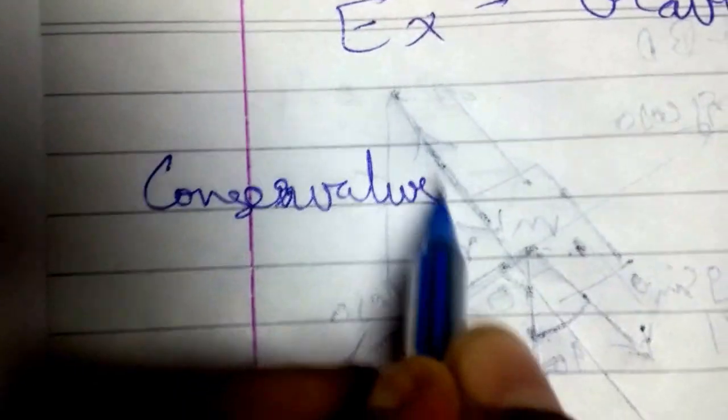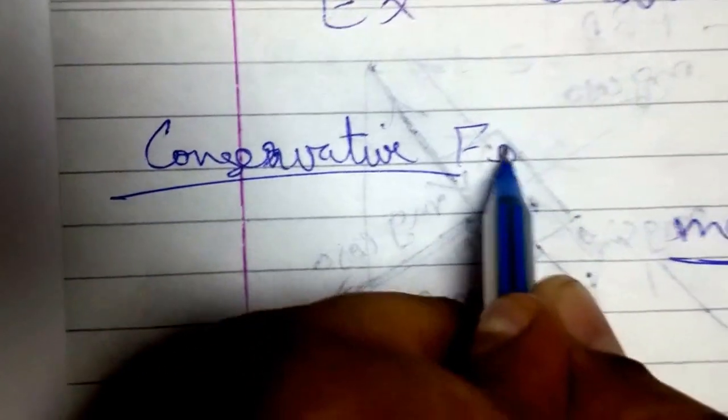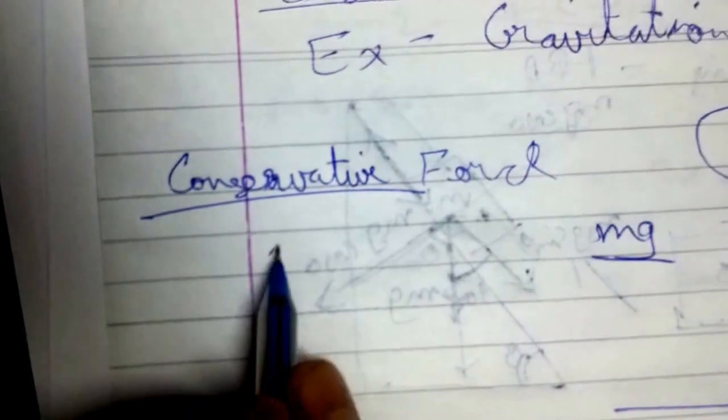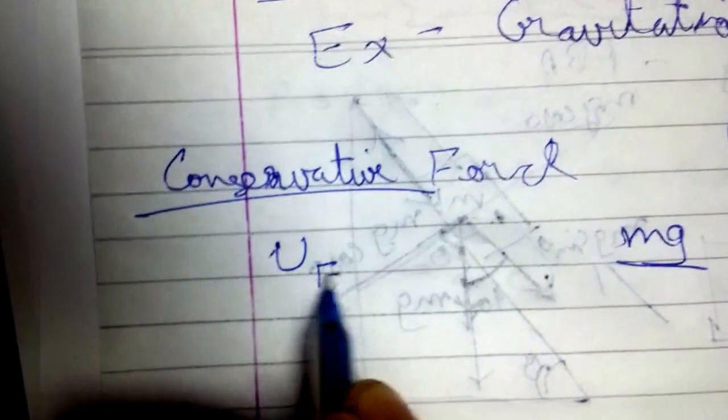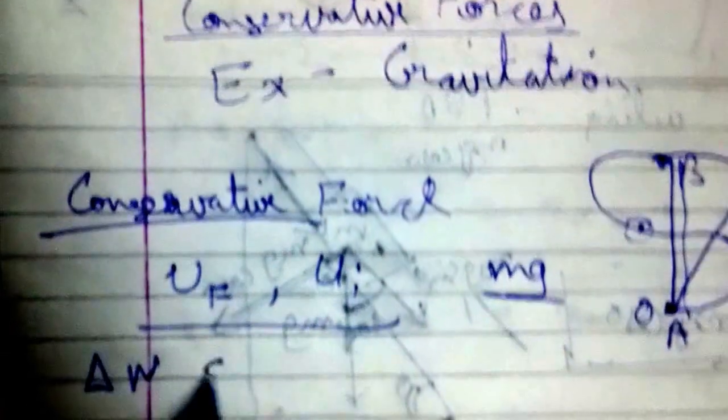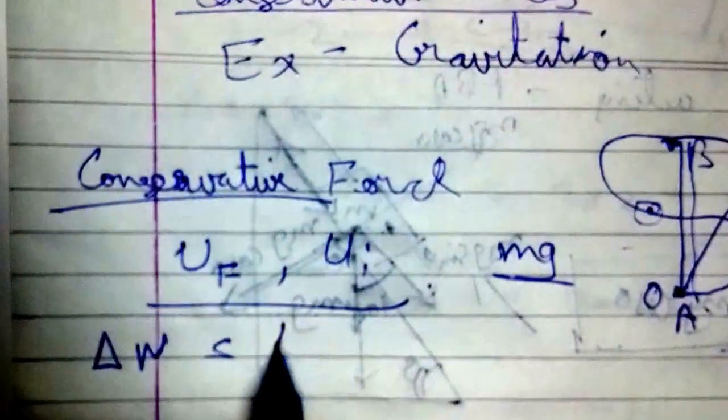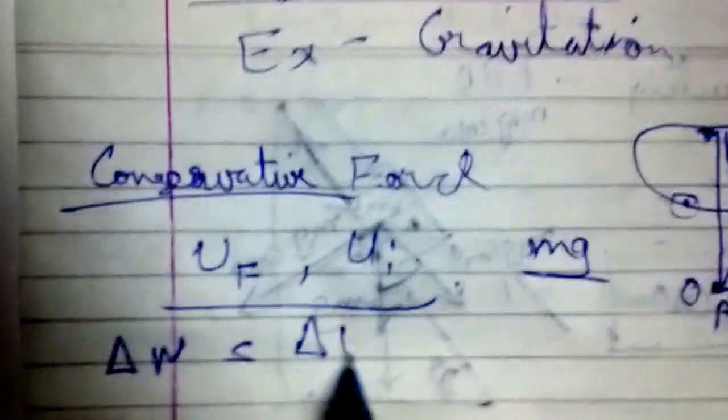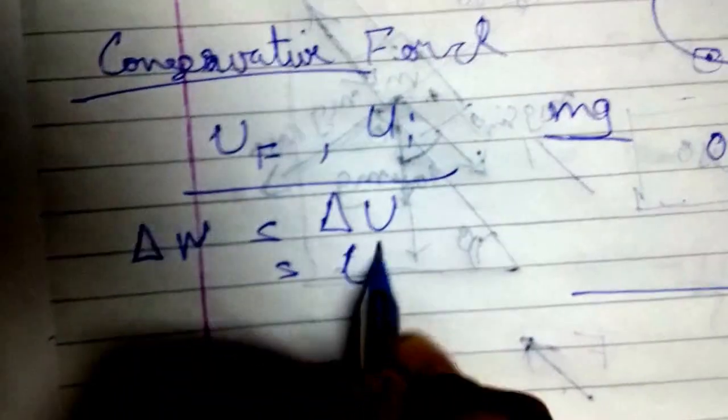So you can say that in conservative forces, the work done depends only on the final and initial position of the body. It ultimately depends on energy in the final position and energy in the initial position, and work done ΔW can be regarded as change in potential energy, that is ΔU, which is potential energy in final position minus potential energy in initial position.